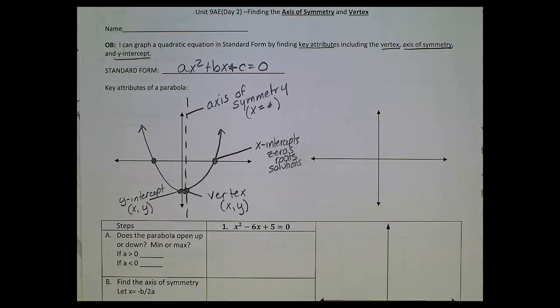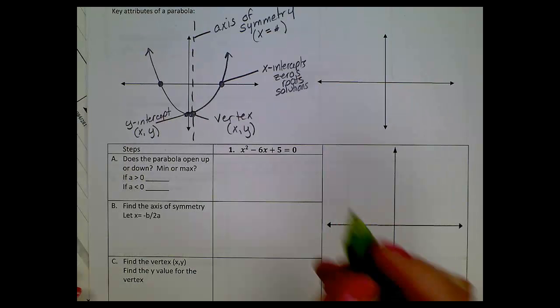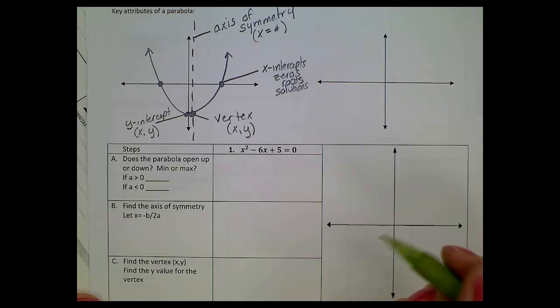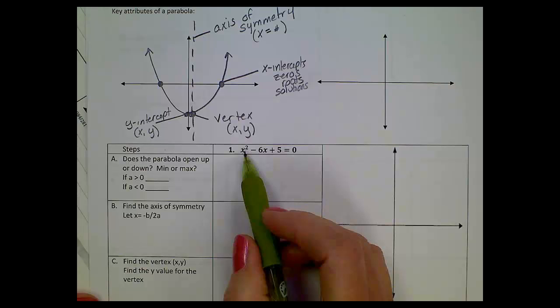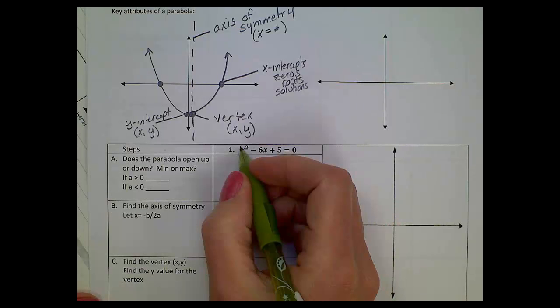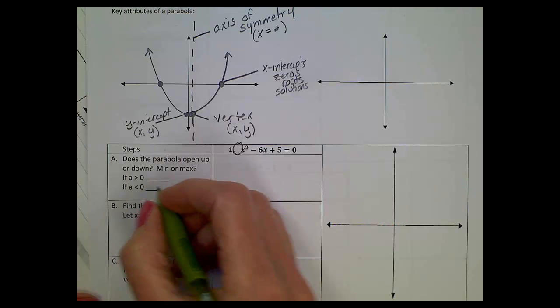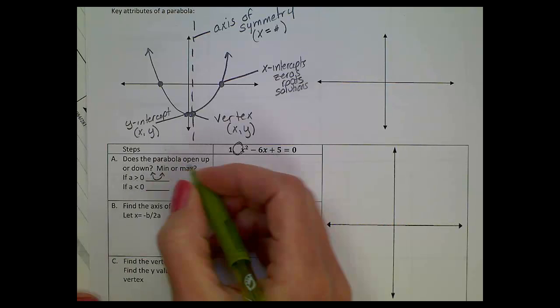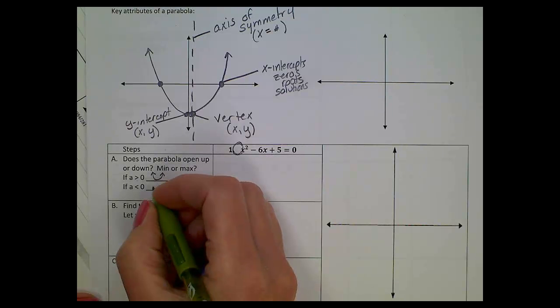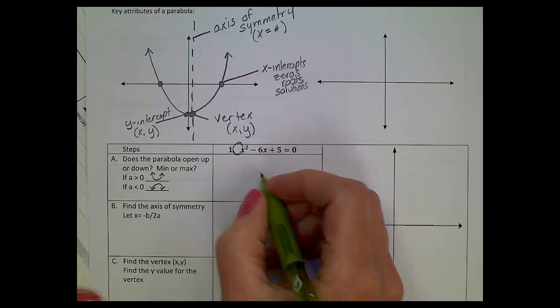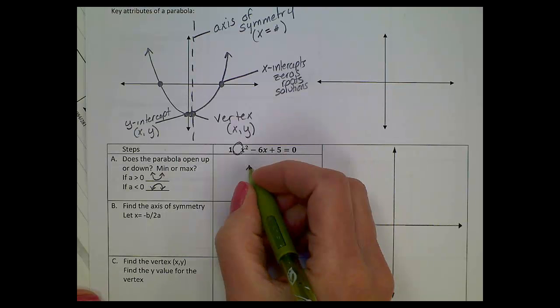So let's try our first equation: x² - 6x + 5 = 0. It's already in standard form, so we can start to tackle it. Now, any time you see an x² term and your leading coefficient here, which is our a value, is positive, it will open up. If the a value is negative, it will be flipped or upside down. This parabola will open up.